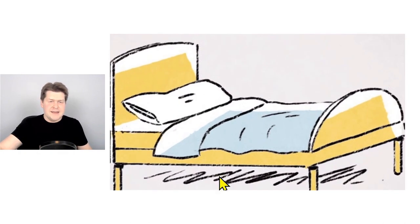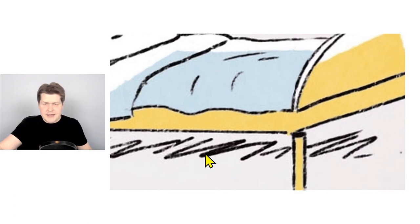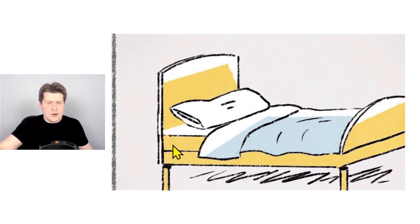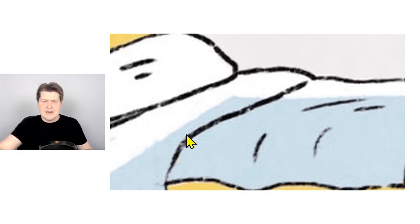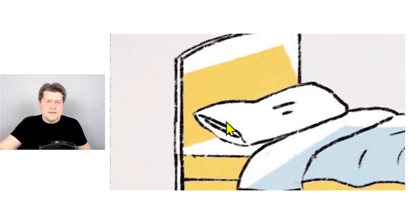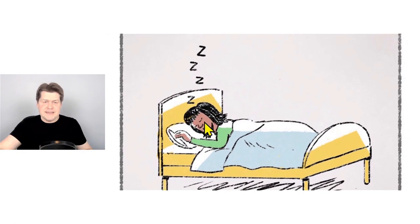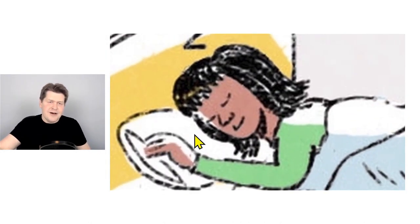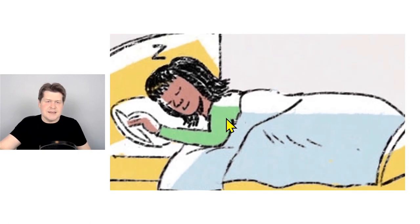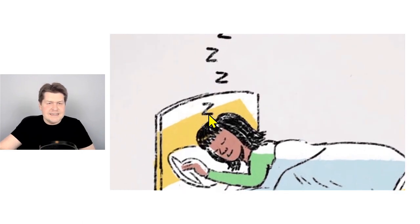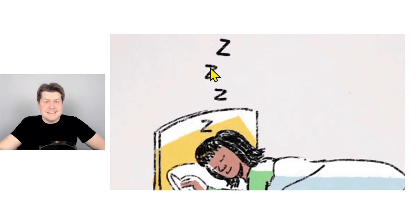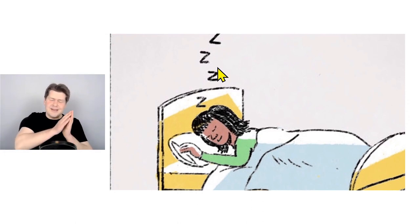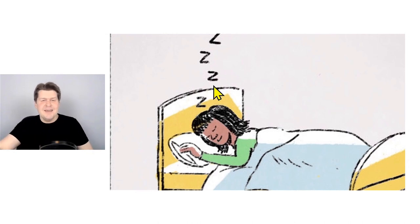So in these pictures, there is a bed — this is the bed frame, these are the legs of the bed, this is the footboard at the foot of the bed, and this is the headboard at the head of the bed. And on the bed there is a mattress, and on the mattress there is a blue blanket and a white pillow. In this picture, there is a woman sleeping, wearing something green, resting her head and hand on the pillow, and lying under the blue blanket. And we can see some Zs here — the Zs show that she is sleeping, and maybe she is also snoring.